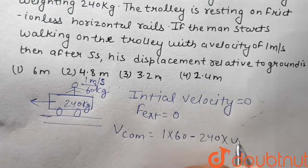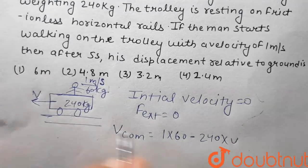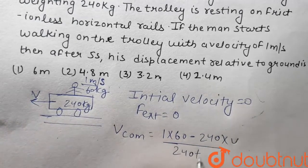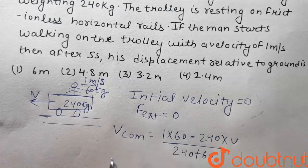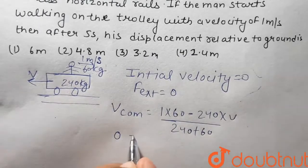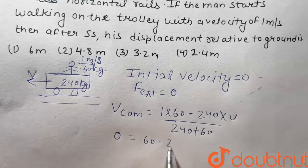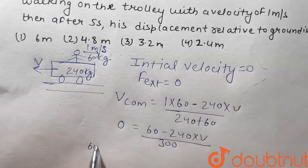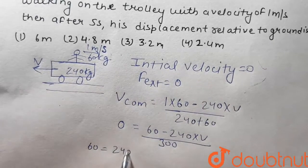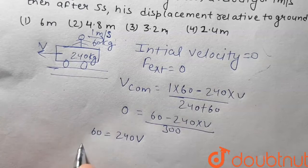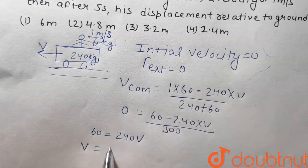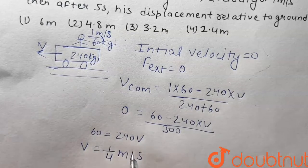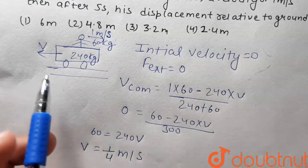Using conservation of momentum between the trolley and the man: 60 times V_man minus 240 times V_trolley equals 0, where total mass is 240 plus 60. Solving: 60 times 1 equals 240 times V_trolley, so V_trolley equals 1/4 meter per second.